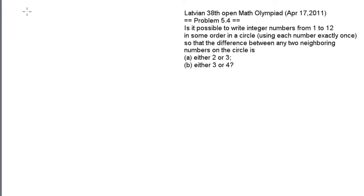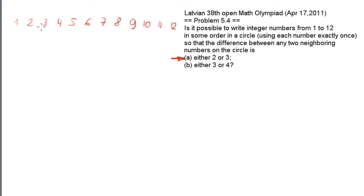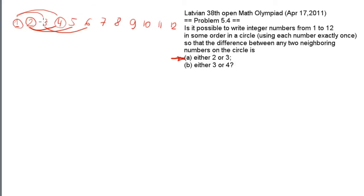Problem 4 for grade 5: write 12 numbers in a big circle so that any two neighboring numbers have a difference of either 2 or 3. Starting by writing them in a straight line to see differences clearly, and connecting any two that should be neighbors: number 1 can only have neighbors 3 and 4, number 2 can only have neighbors 4 and 5. Number 3 cannot connect to 5 because we'd never get out of a small circle of five numbers.